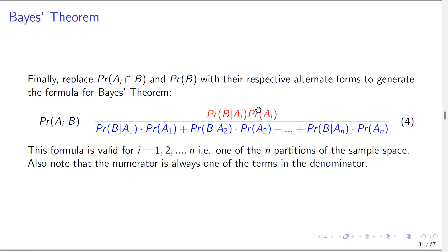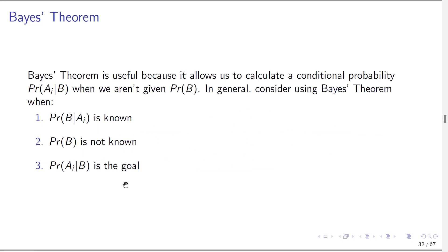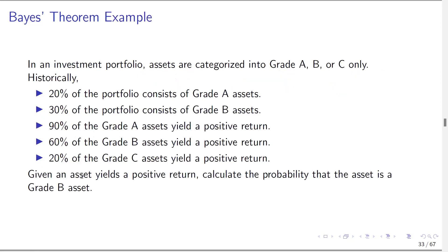This formula is valid for any particular Ai — it could be A1 or A2. You use Bayes' theorem when P(B|Ai) is known and P(B) is not known, but you want to find P(Ai|B). There are questions you cannot solve without this law.